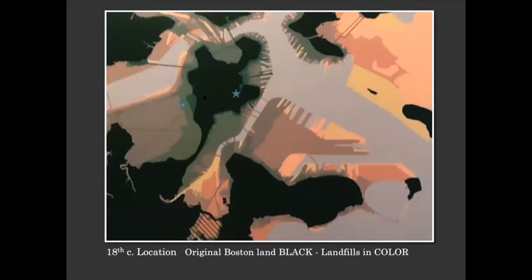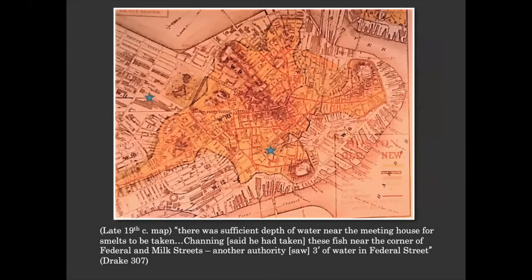On the screen you see the original Shawmut peninsula in black. The little blue star to the right shows where the original Long Lane Federal Street Church was — pretty near the water. A star a little to the left shows where Arlington Street is today, which would have been deep in the muck of the Back Bay with no landfill for a long time. Channing said there was sufficient depth of water near the Federal Street meeting house for smelts to be taken — he had taken fish near the corner of Federal and Milk Streets. Hard to imagine fishing in the financial district today.